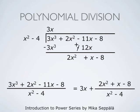We get that the remaining numerator is now 2x² + x − 8, and this means that we have found the presentation (3x³ + 2x² − 11x − 8) / (x² − 4) = 3x + (2x² + x − 8) / (x² − 4). The rational function on the right can be further divided because the degree of the numerator equals the degree of the denominator. So one more step is needed.